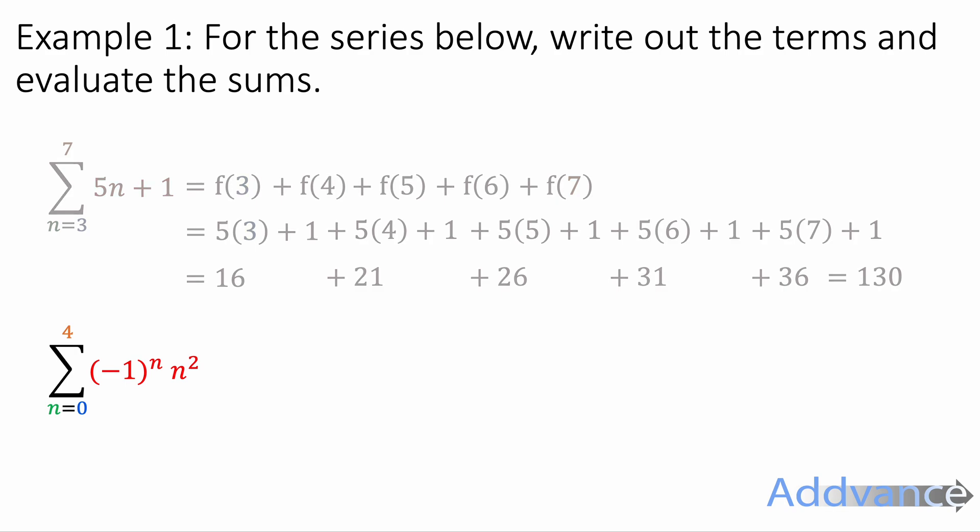Now the sum between n equals 0 and 4. We're going to substitute every integer between 0 and 4 into that expression minus 1 to the power n times n squared. So we're putting every number between 0 and 4 in.